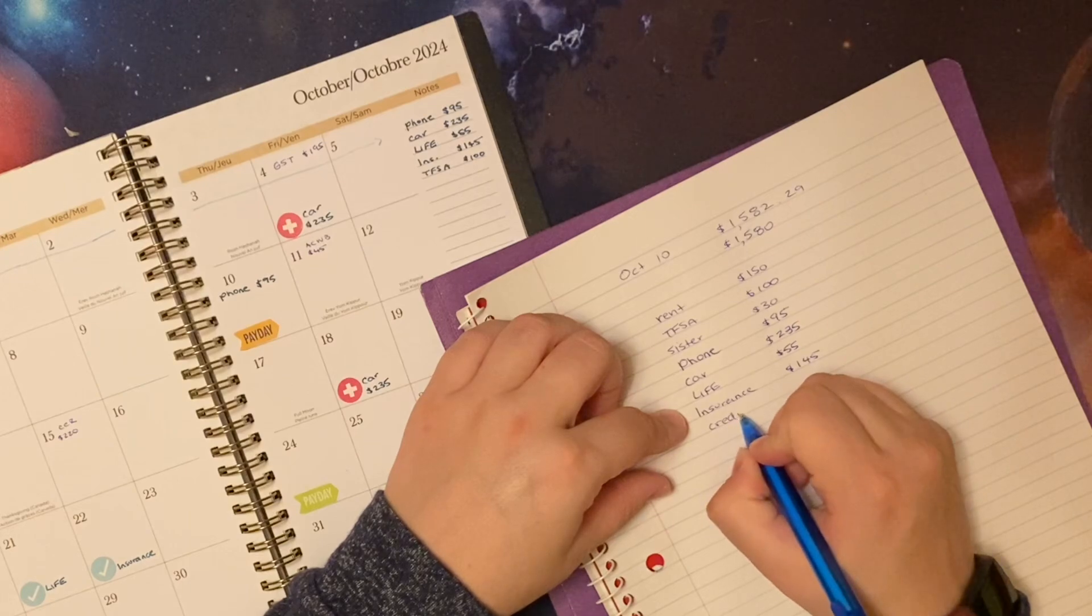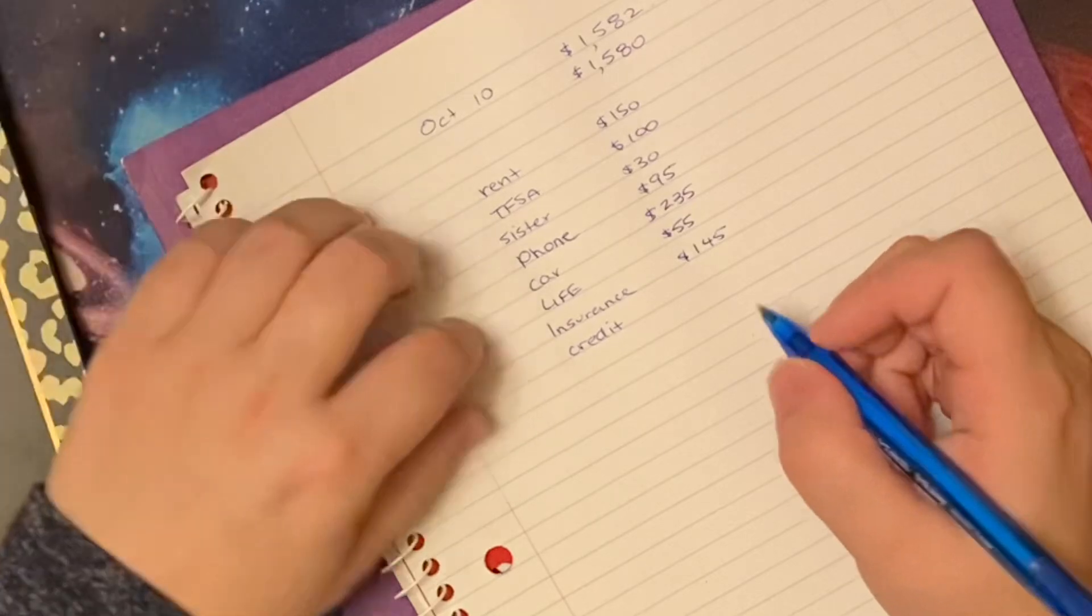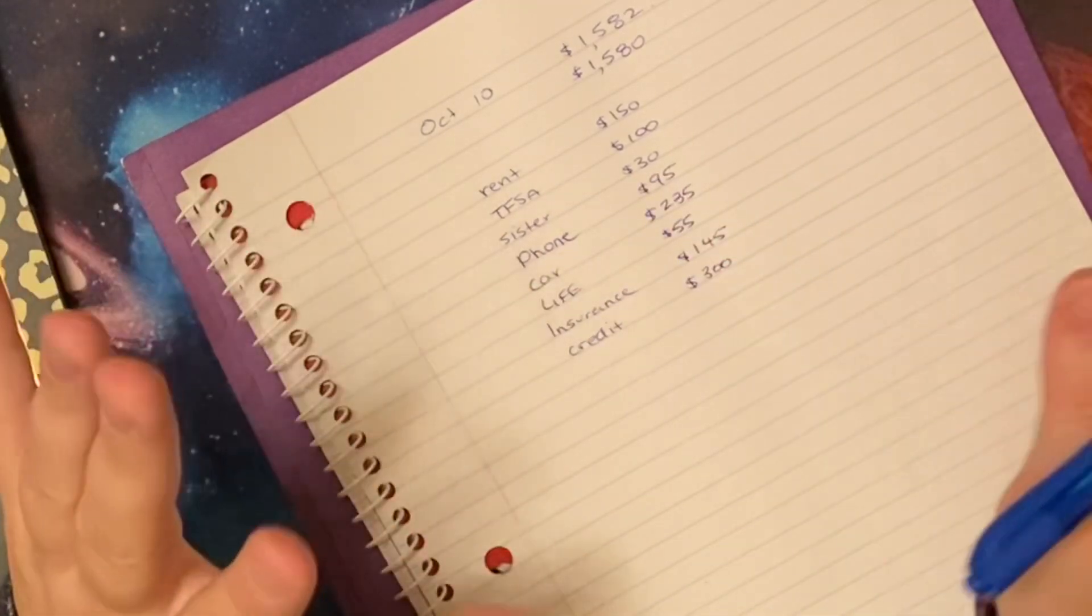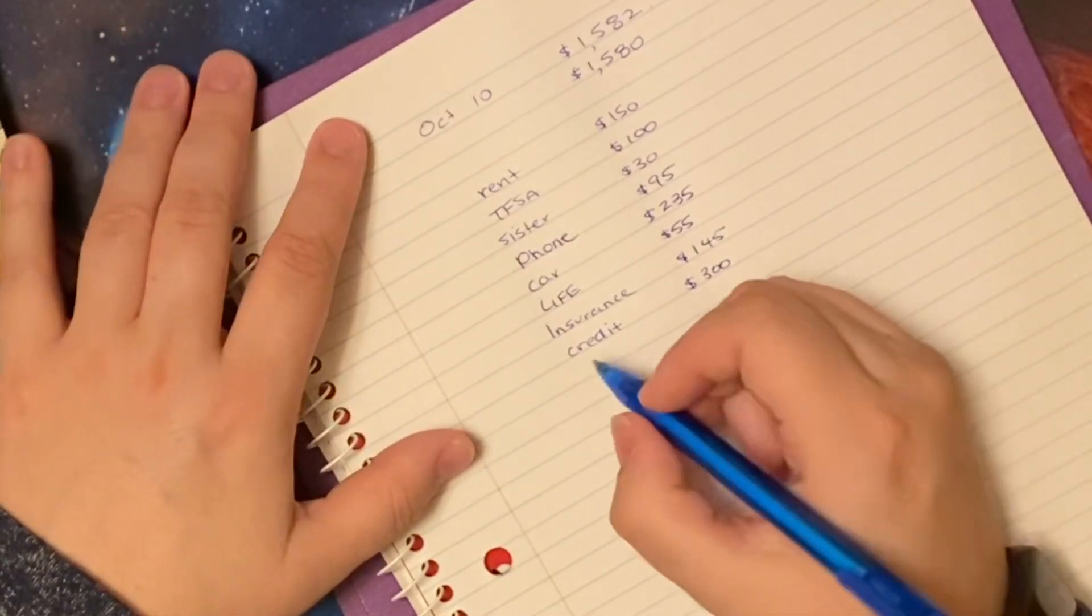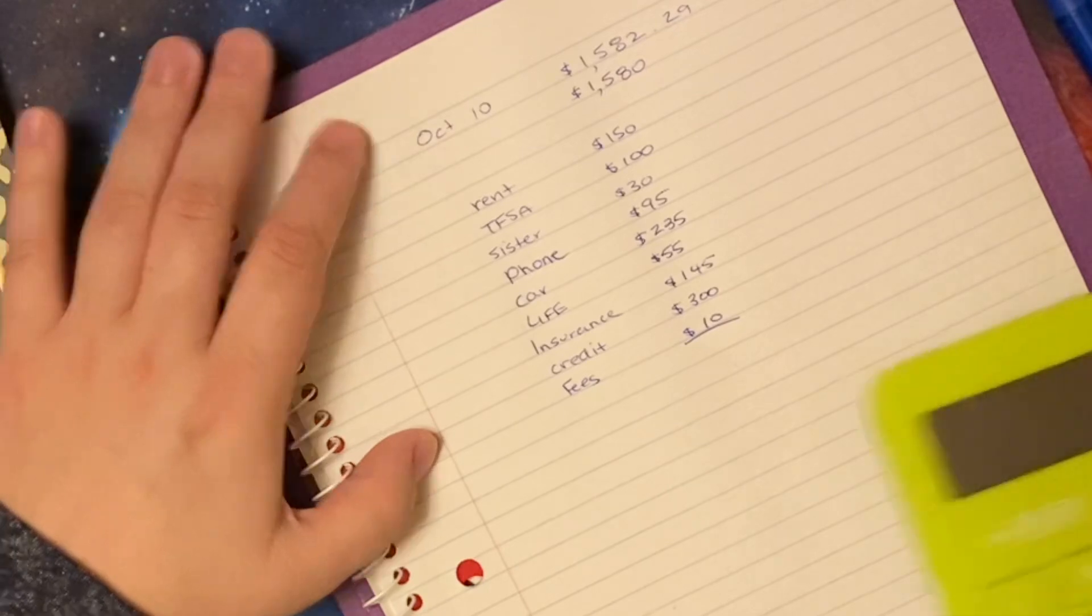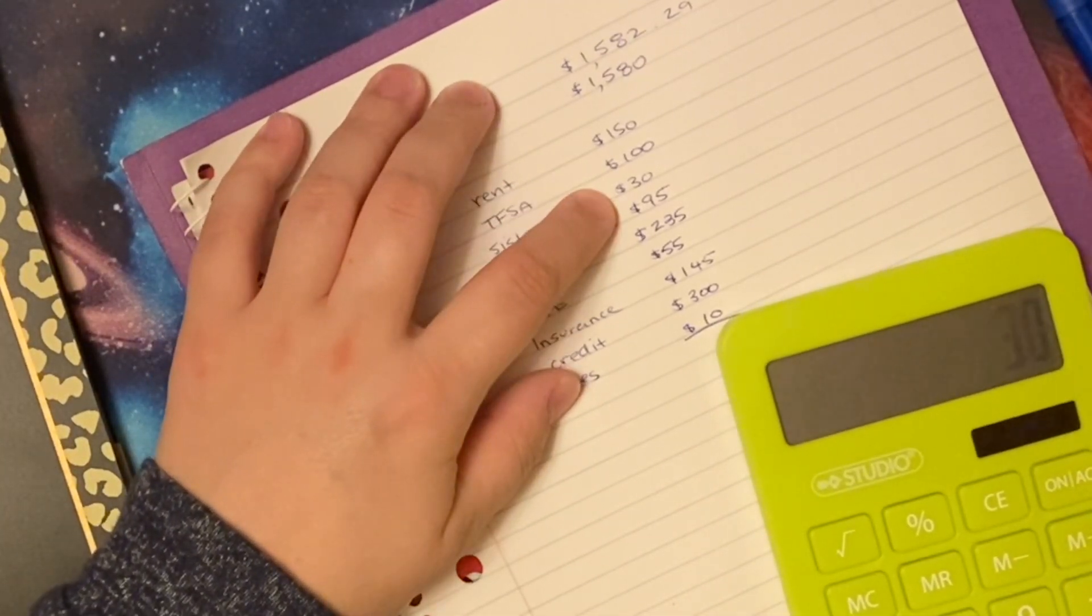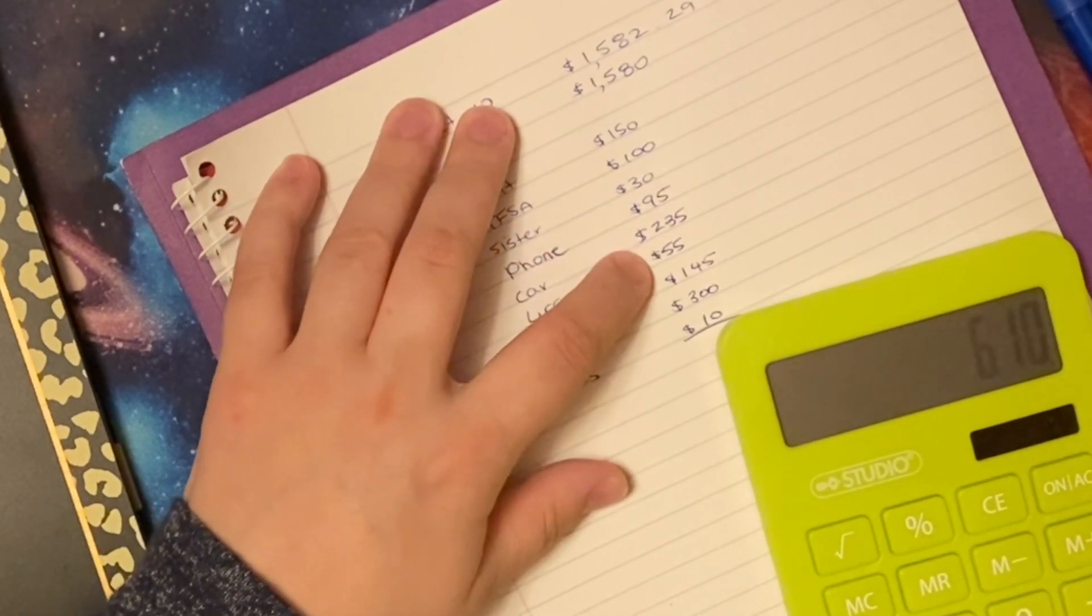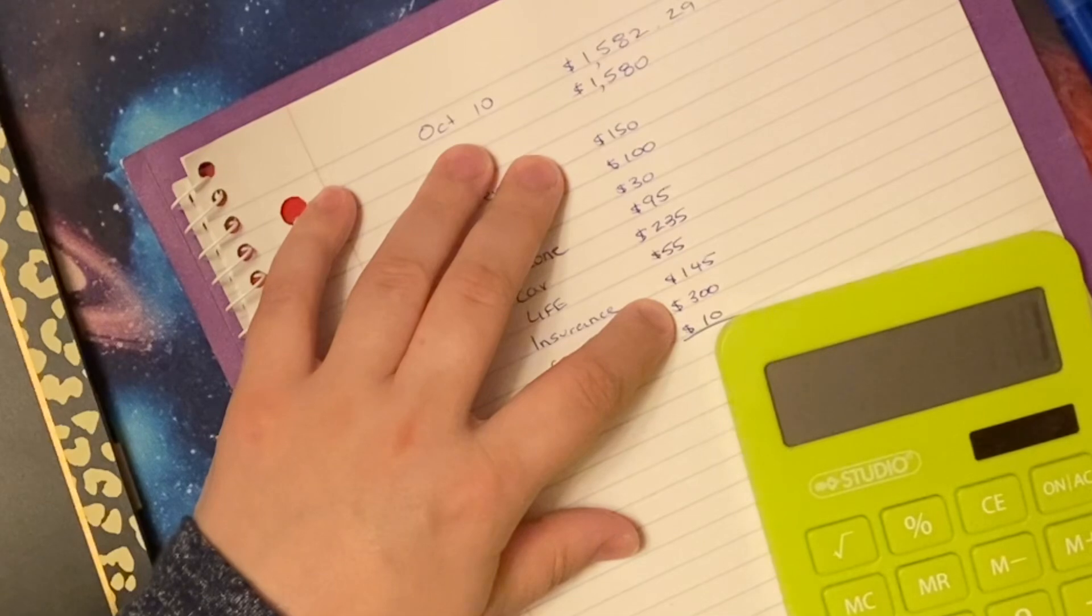Phone bill, check. Tax savings account, check. Car payment is $235. Life insurance is $55. Car insurance is $145. Then we get paid again. I need to put credit card payment. My credit card is so not where I want it right now. I'm gonna put $300 on it. That'll help with gas and bills coming off of it.